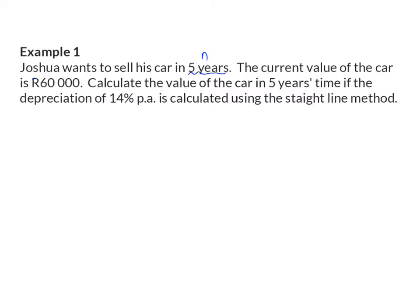The current value, or the starting amount P, is 60,000 Rand. He wants to know the value of the car if the depreciation is at 14%, which will be our I, calculated using the straight line method. This tells us which formula we are going to use. Now we can substitute into the equation, and we'll see that in five years' time, this car will only be worth 18,000 Rand.